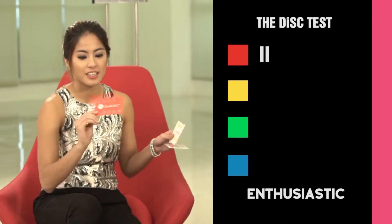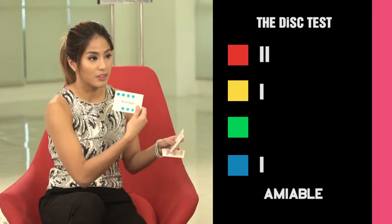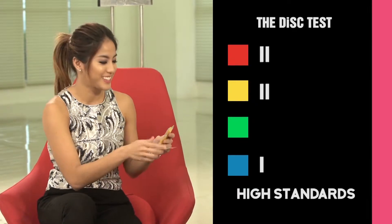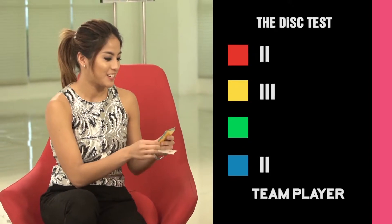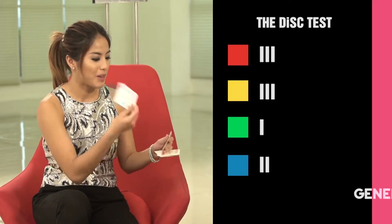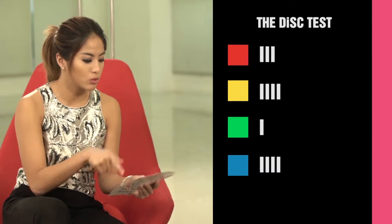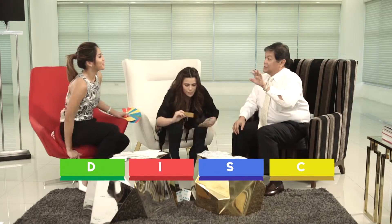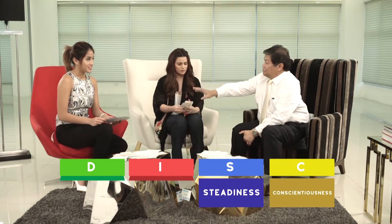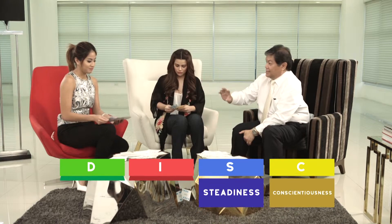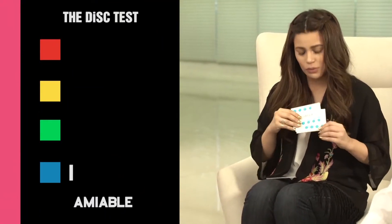Can you tell us the words you selected and show us the color at the back? Okay: confident, enthusiastic, conscientious, amiable, high standards, diplomatic, team player, adventuresome, generous, patient, loyal, and analytical. How many of each color? Four yellows, four blues, three reds, and one green. Yellow stands for conscientiousness and blue stands for steadiness, so she would be predominantly steadiness and conscientiousness, which we classify as a 'Perfection' type.